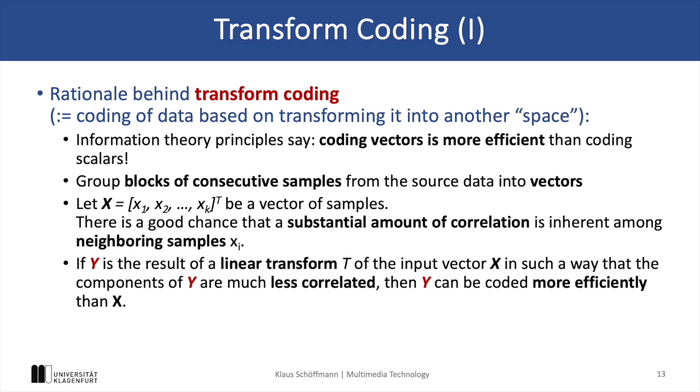For example, if you have a vector X consisting of k values and if you apply a linear transform T to it in order to produce Y, then the transform reduces correlations among the components of X, and this decorrelation allows the encoding process to represent data more compactly or more efficiently.